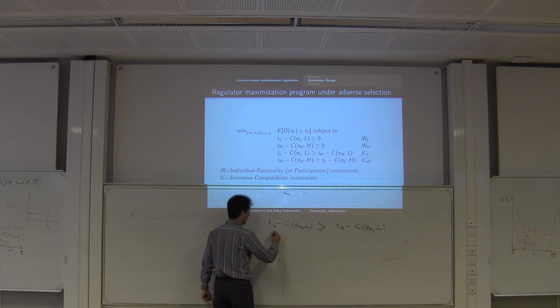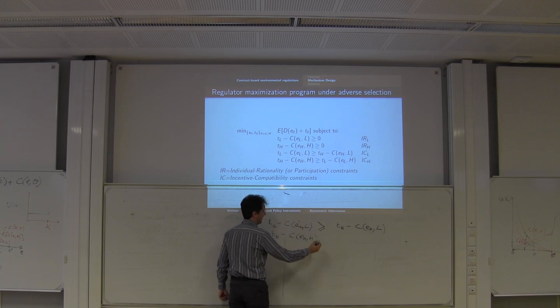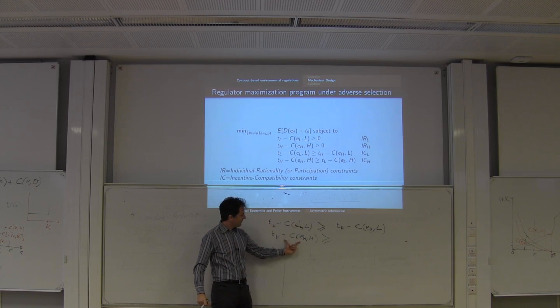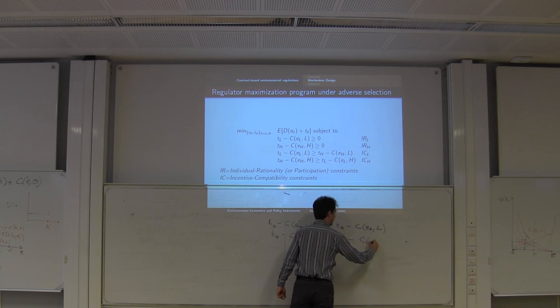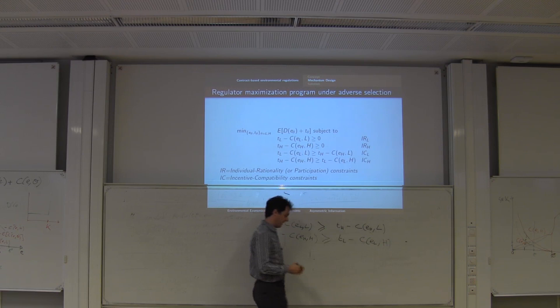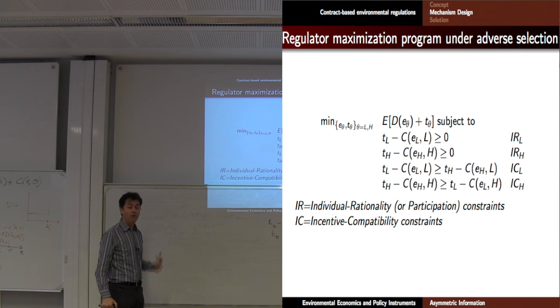For the high-cost firm, there is a reverse incentive-compatibility constraint. You want to make sure it prefers to tell the truth rather than lying — that it will not pretend to be low-cost even when its costs are high. So you have two incentive-compatibility constraints.